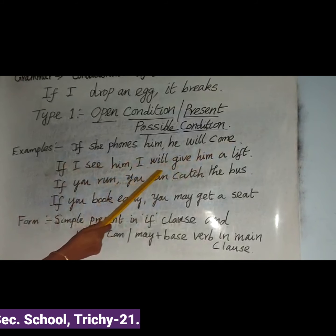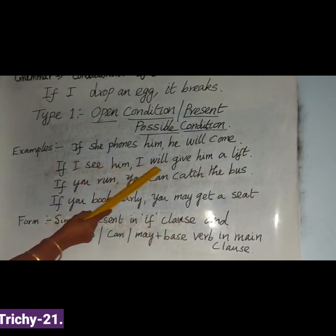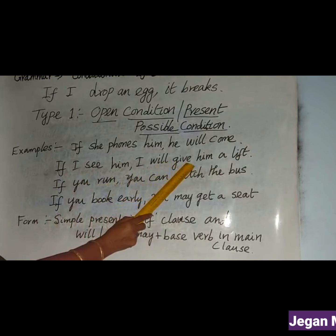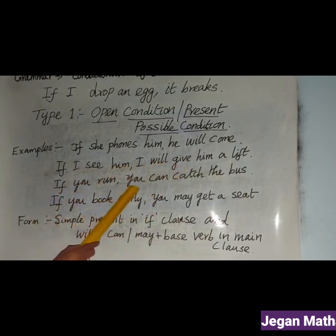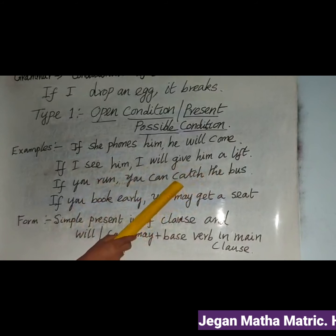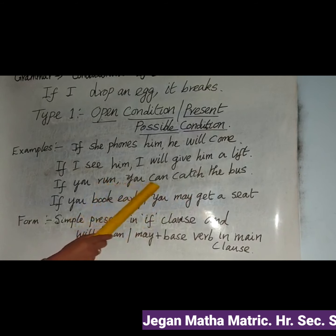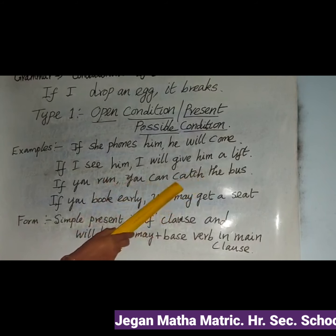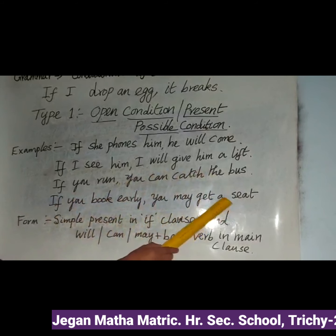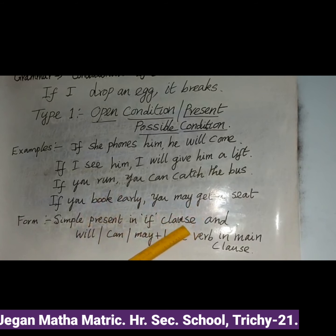More Type 1 examples: 'If I see him, I will give him a lift' — present tense in the if-clause, future tense in the main clause. 'If you run, you can catch the bus' — 'run' is present tense, 'can catch' means you will be able to catch the bus. 'If you book early, you may get a seat' — 'book' is present tense, 'may get' expresses probability.